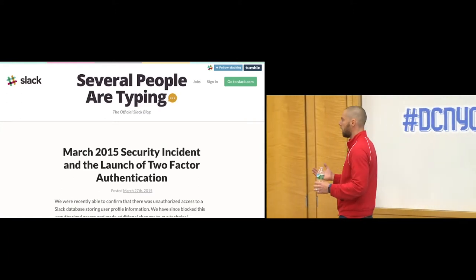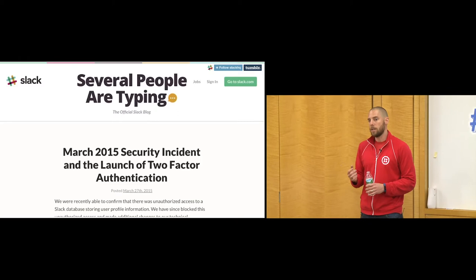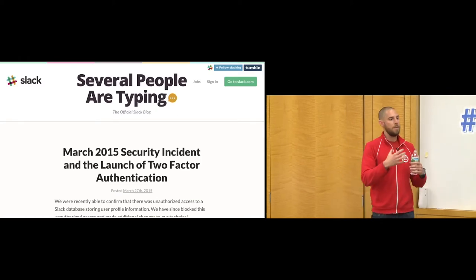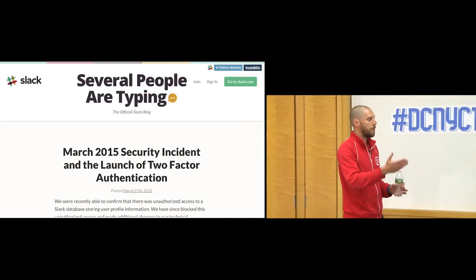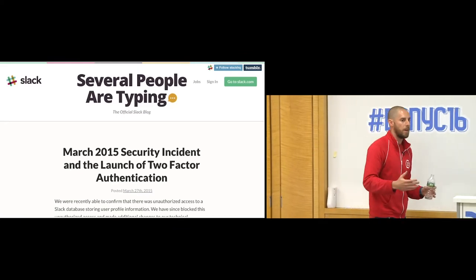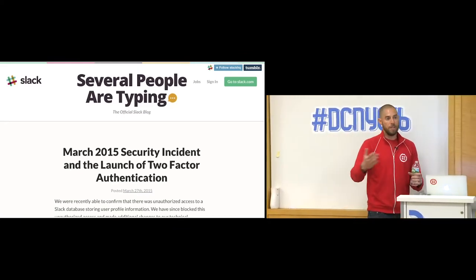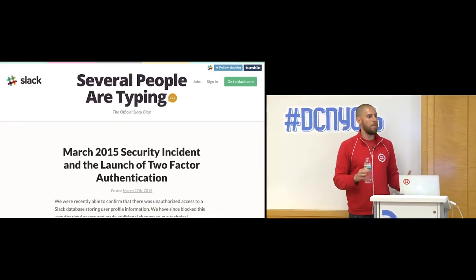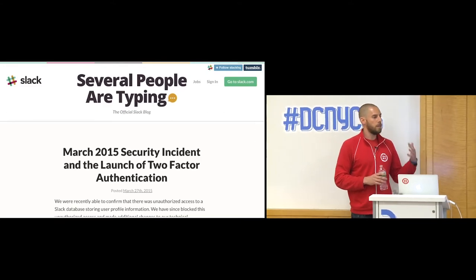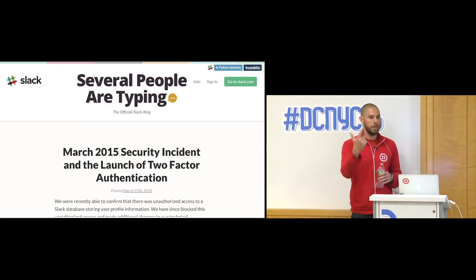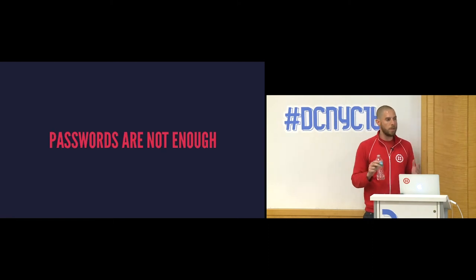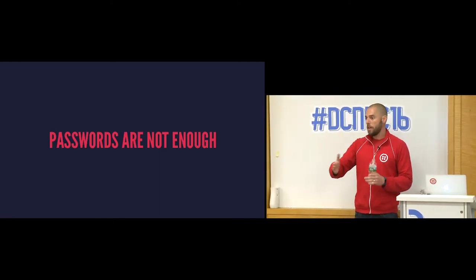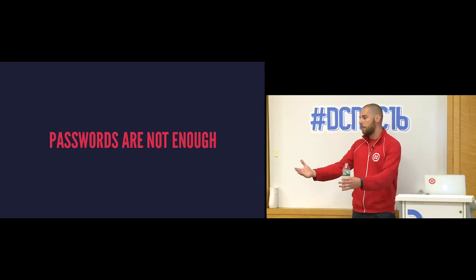There was one of these hacks that hit the developer community especially last year — Slack — and what was interesting is that in the blog post where they announced the hack, there wasn't even a comma between 'hey, something bad happened' and 'we're launching two-factor authentication to prevent this from happening in the future.' Two-factor authentication is considered the primary method by which you prevent your users from losing accounts, given that users use bad passwords, reuse them, and companies are losing passwords all the time. Passwords are simply not enough anymore.